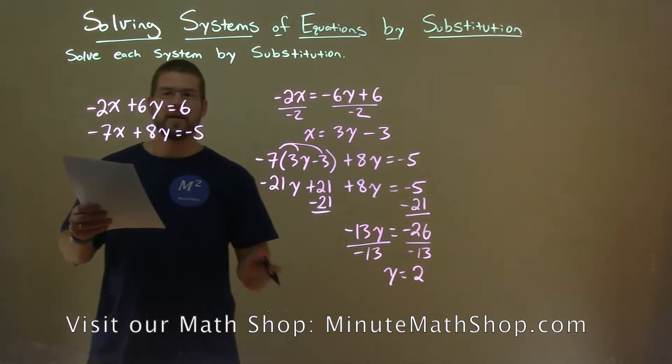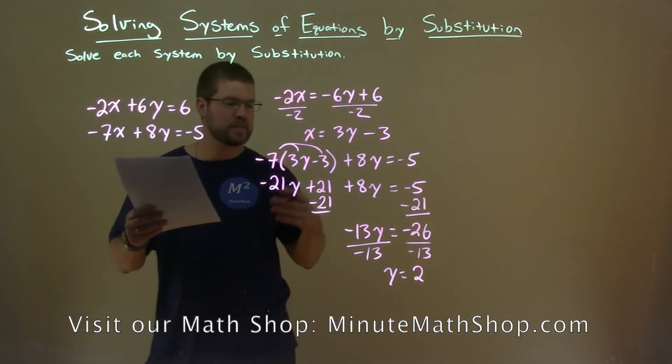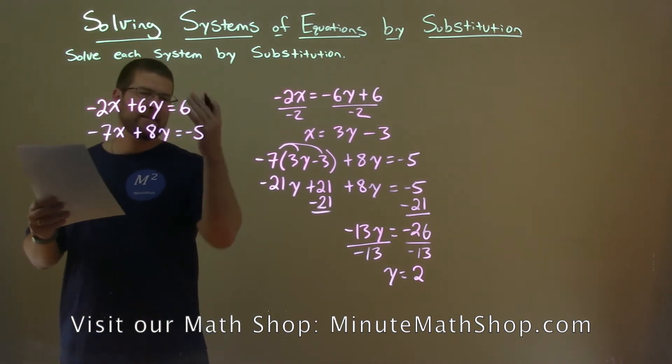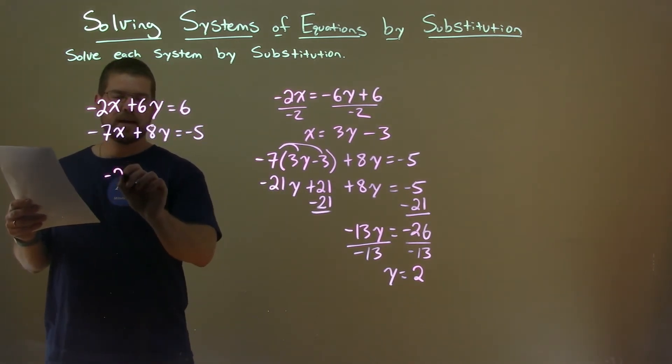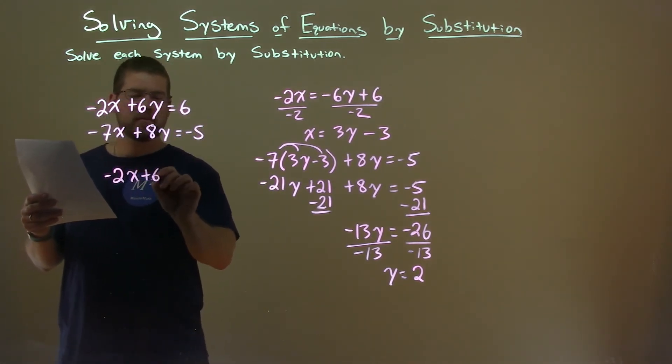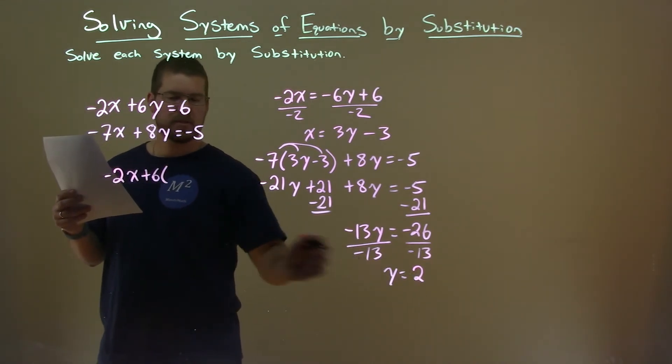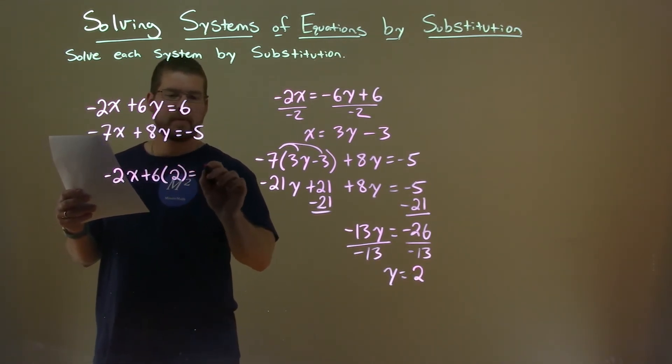So we take that information and we need to plug it into one of our first two equations to solve for x. I think the first one's easier. So we take negative 2x plus 6, and instead of y, I'm putting that 2 in for it, and that equals 6.